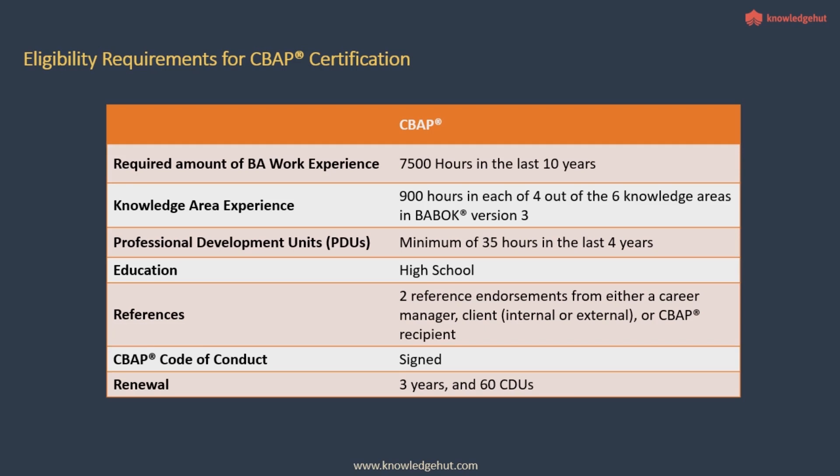You need to include two references in your CBAP application form. Make sure these referees can be contacted by IIBA if required — this is relevant in case of an audit. Once you have filled in the application form online, you need to sign CBAP's code of conduct before you submit. After obtaining your credential, you need to renew it every three years by reporting 60 CDUs — continuing development units — through activities such as conducting webinars, trainings, or attending classroom sessions.